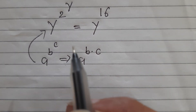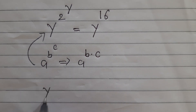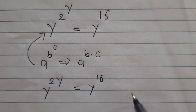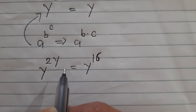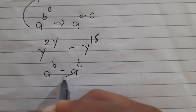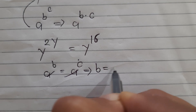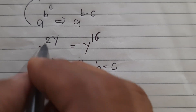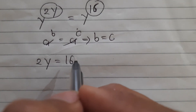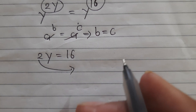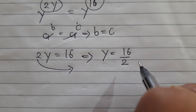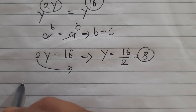We apply this rule, so we have y to the power of 2y is equal to y raised to 16. Now here we apply another formula: when we have the same base with different powers, then the exponents are equal — so 2y is equal to 16. We take 2 to the right hand side in division.